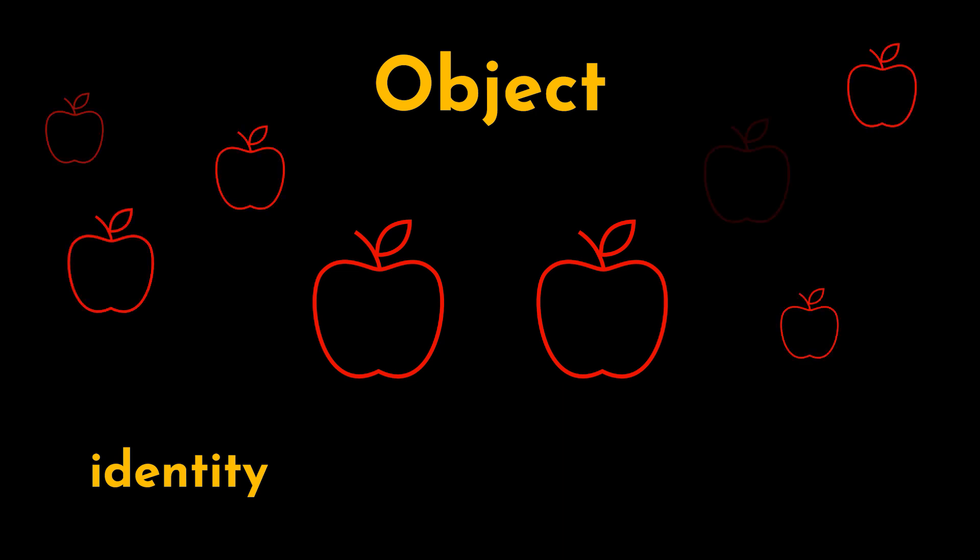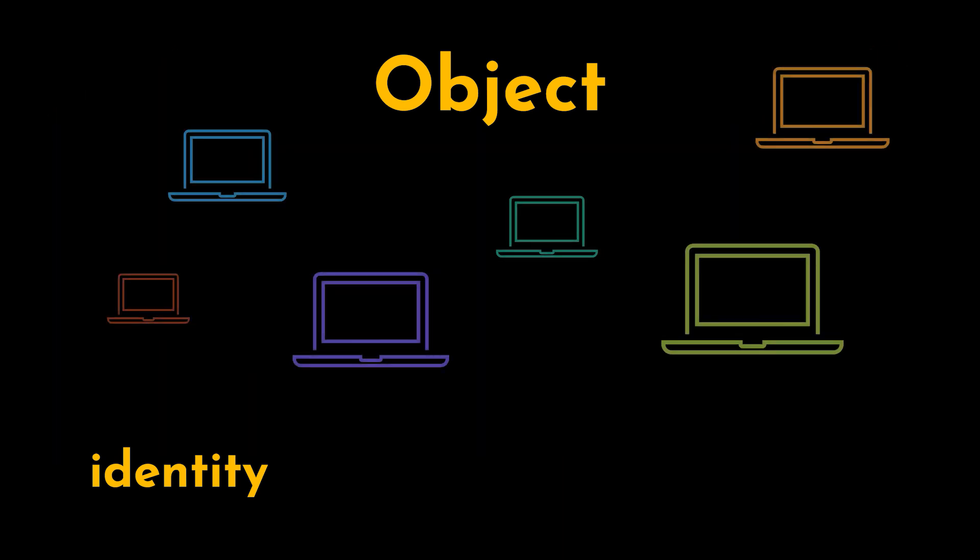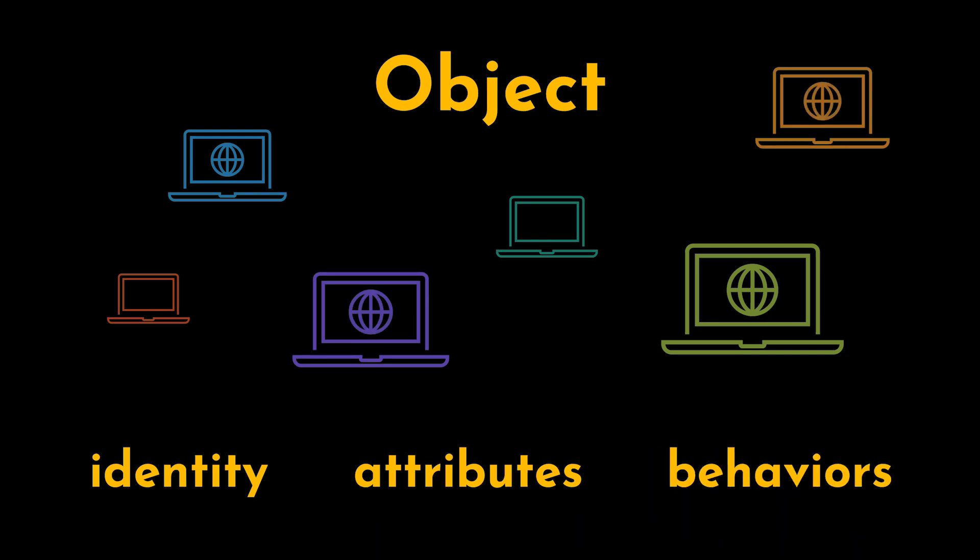Laptops can have multiple brands, come in multiple colors. These are attributes that relate to this specific laptop. Other laptops can have the same brand or the same color but still they're different laptops. A laptop can be on or off, can open a program or close it. These are behaviors specific to a laptop. An apple cannot behave as such, but all laptops can.